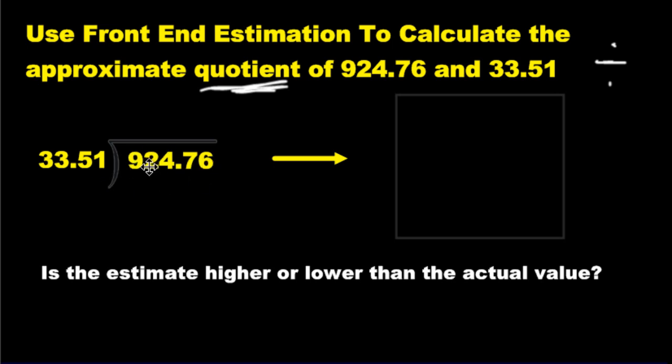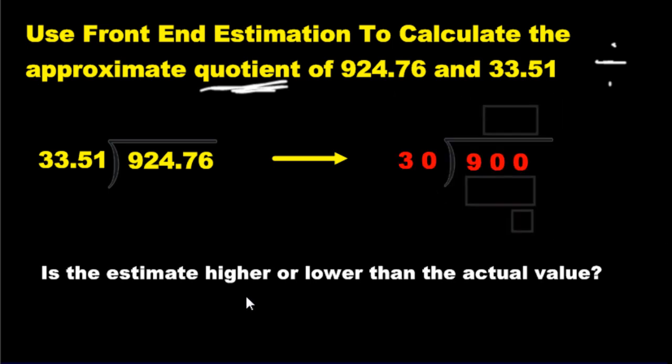This number here on the inside becomes 900. The number on the outside becomes three and then just zero. So 30. 900 divided by 30. Whatever number you put on top in long division, if you times it by this number, you need to get the number on the inside. 30 goes into 900. How many times? 30, 60, 90. It's going to be 30 times. I'm not going to count them all out, but let me show you how I figured that out.